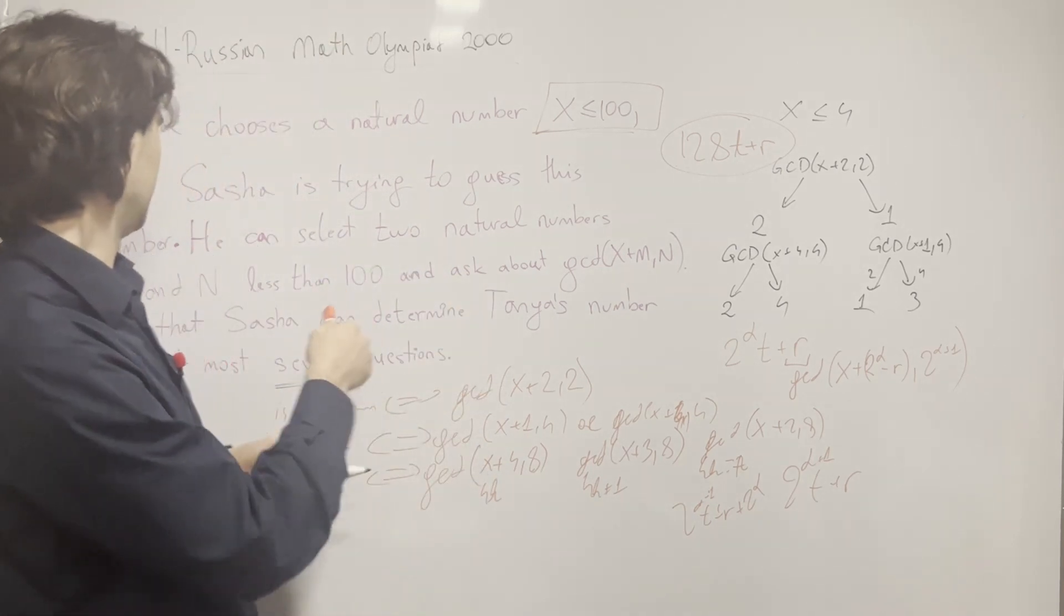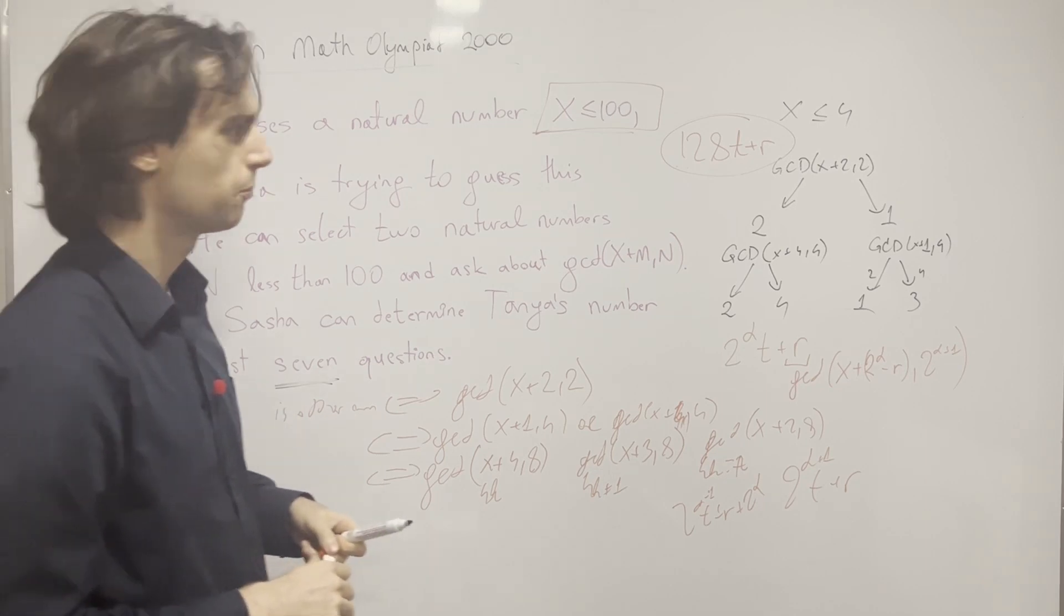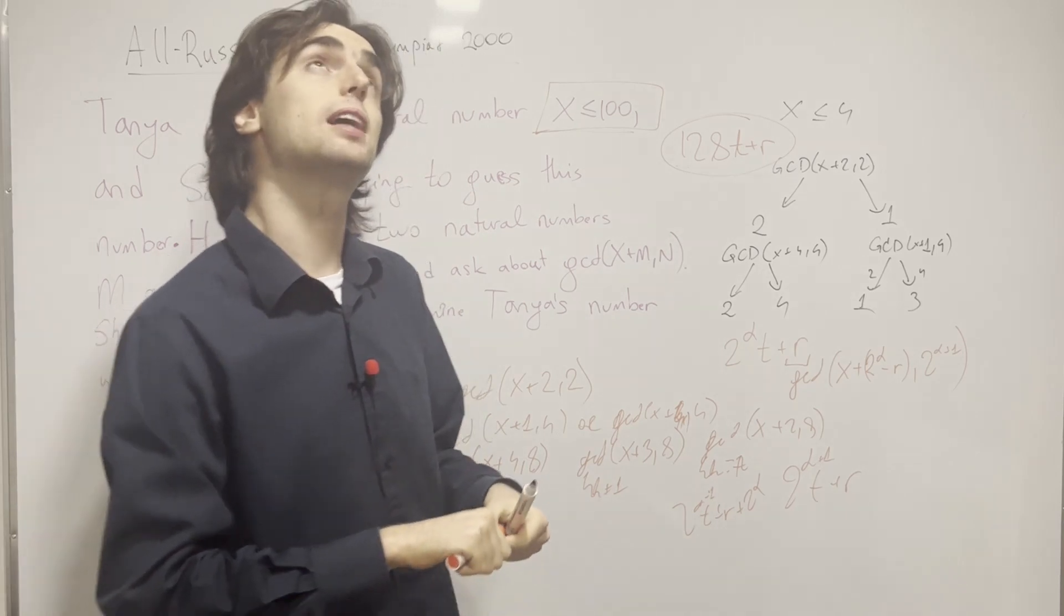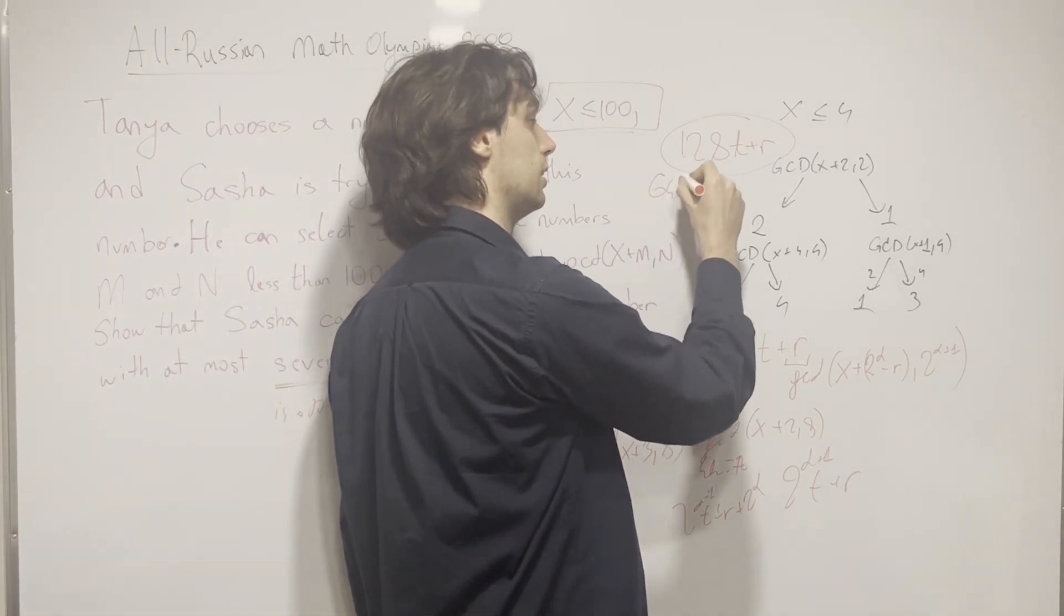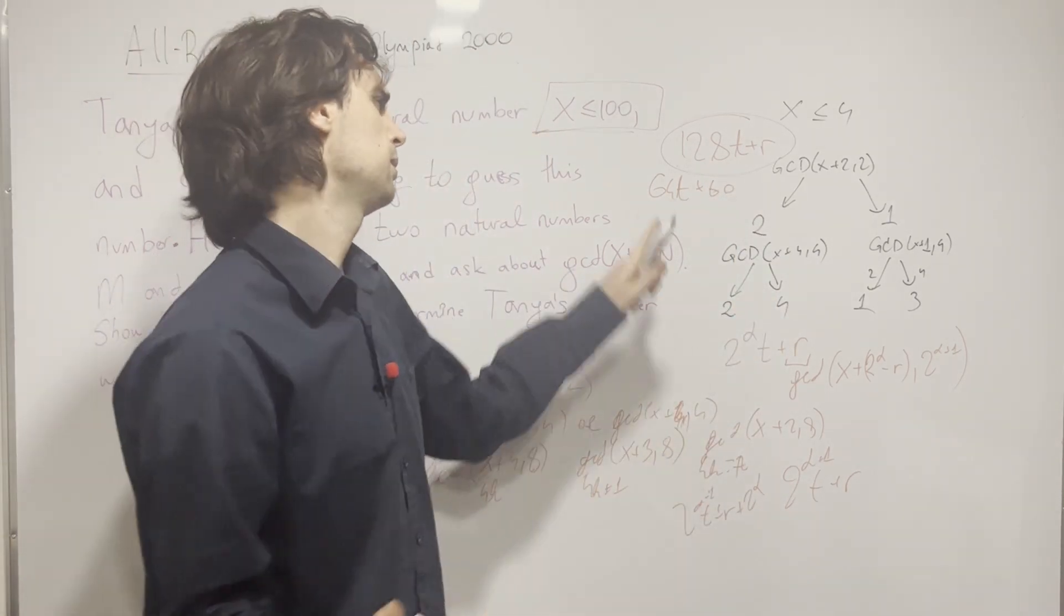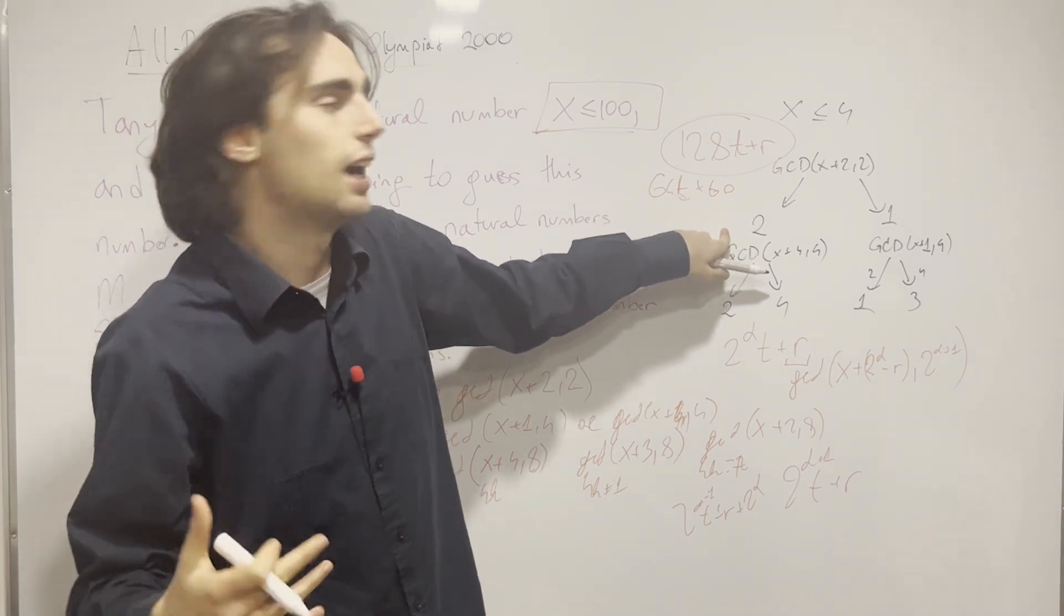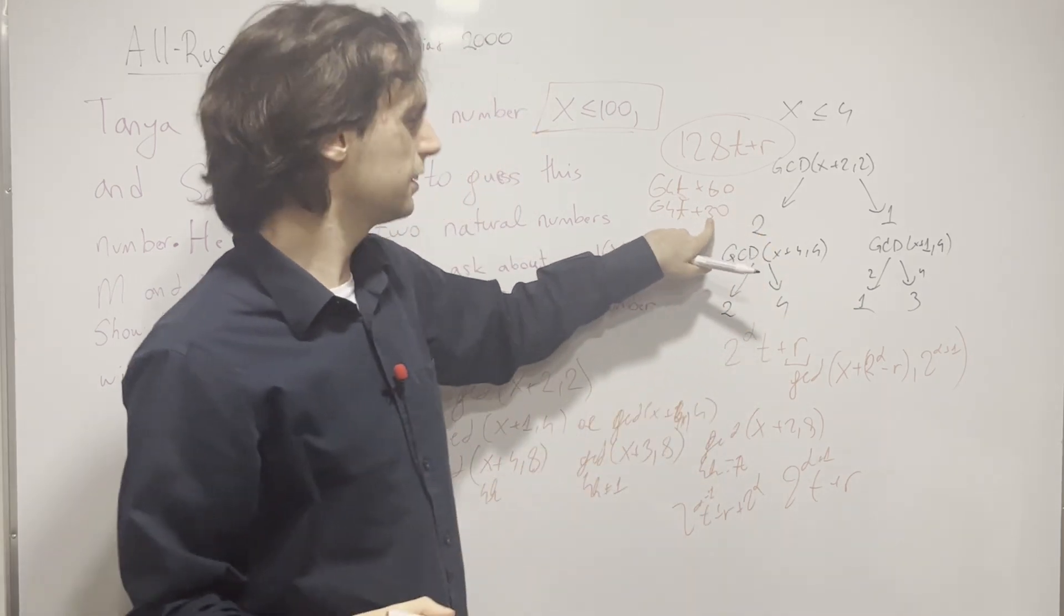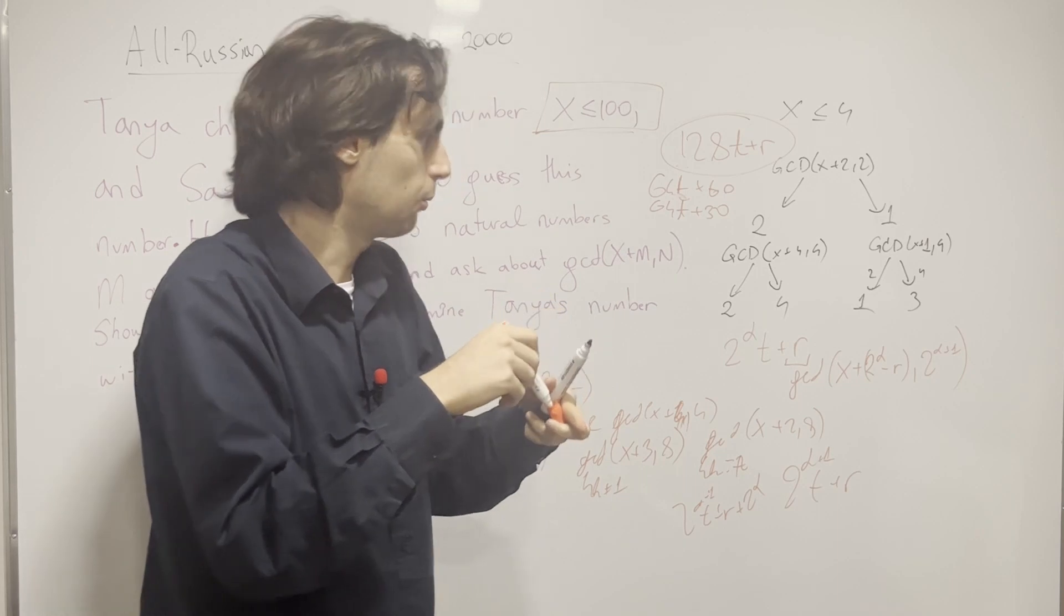That's how Sasha can determine Tanya's number with at most 7 questions, and exactly 7 questions actually. Well, maybe not exactly - if you get it's of the form 64t plus 60, then from here you can already determine that the number is 60, you don't need the next question. But if you get 64t plus 30, then you're not sure if the number is 30 or 94, and that's why you really need the 7 questions.